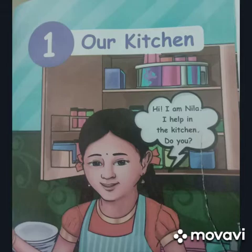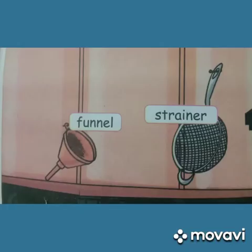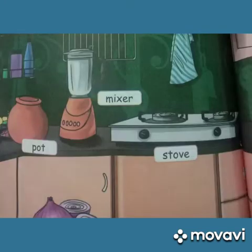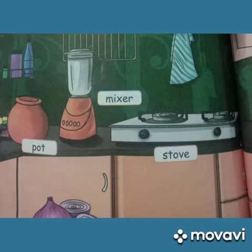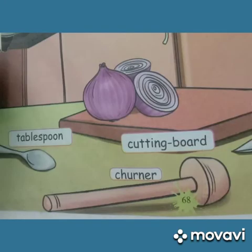First, learn the names of kitchen utensils. Funnel — F-U-N-N-E-L. Strainer — S-T-R-A-I-N-E-R. Pot — P-O-T. Mixer — M-I-X-E-R. Stove — S-T-O-V-E.